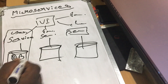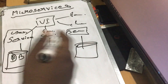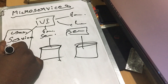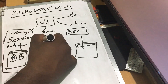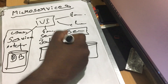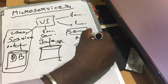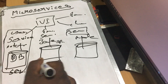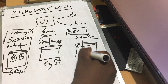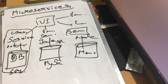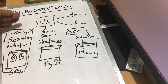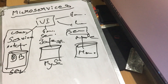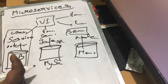Each of these is an independent service, and they don't all have to be in one language. One service can be .NET Core, another can be Java Spring Boot, another can be Node.js — different languages. Similarly, one can use SQL Server, another MySQL, another MongoDB — different databases per module.